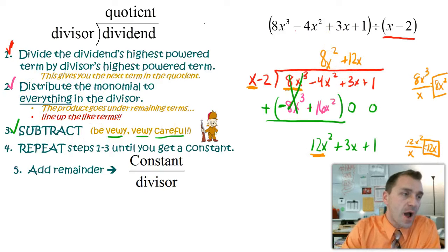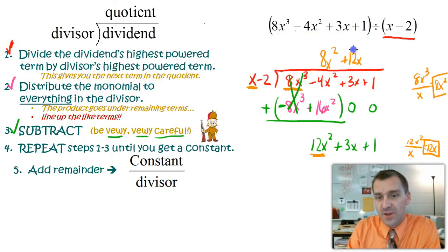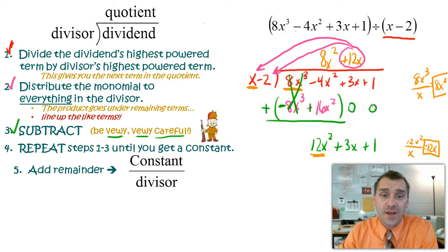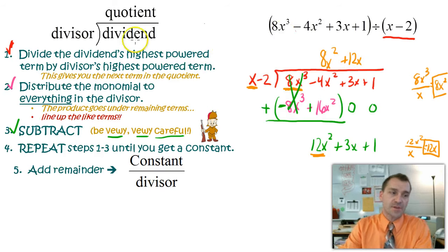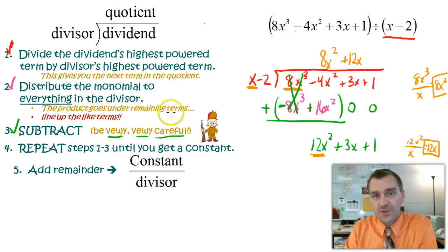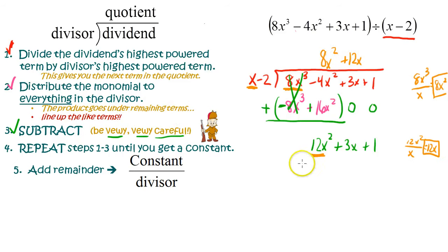Step number 2. Distribute the monomial to everything in the divisor. So this thing here that I just got, the positive 12x, I have to distribute that here to the x, and I distribute it here to the negative 2. We're just repeating the steps we just did. It's exactly right. And as I multiply those, as the step says over here, I'm going to put the product underneath the remaining terms and make sure I line up my terms. So 12x times x gives me positive 12x squared. And then I take 12x times this thing, the negative 2, and that gives me negative 24x. So there I've distributed the 12x to both of these things right here, this binomial.